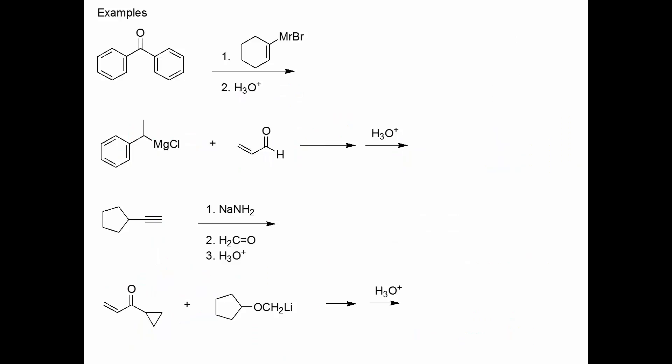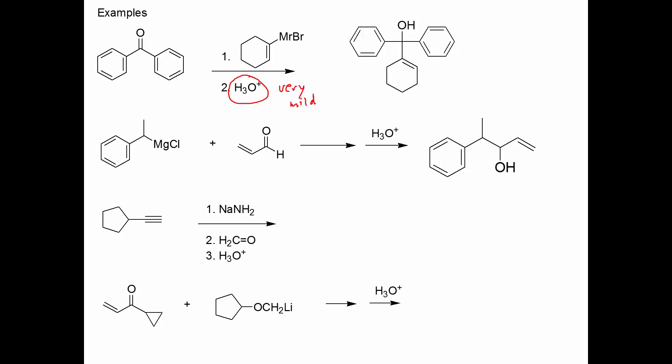Let's look at some examples — try to predict the products. The first one, we have a ketone reacting with a vinyl Grignard. A ketone is going to make a tertiary alcohol, and that's our product. In the third one, we're adding the Grignard reagent to an aldehyde. The aldehyde has an alkene in it, but the reaction still occurs at the carbonyl group. Recognize that we have two chiral centers here, so if you did this reaction, it would be a mixture of diastereomers.